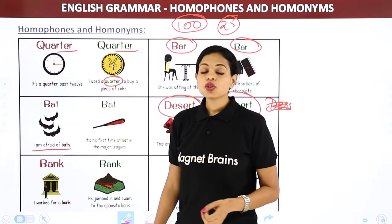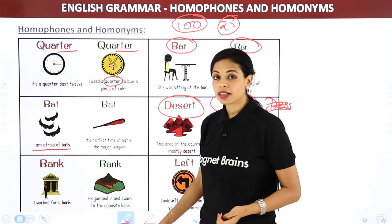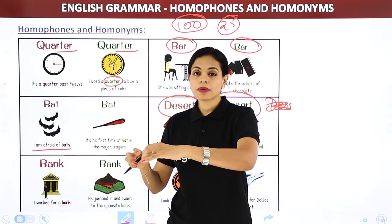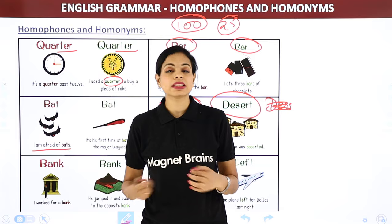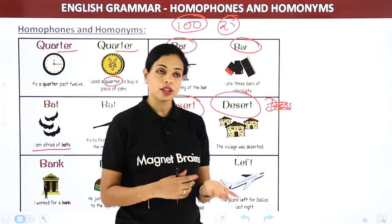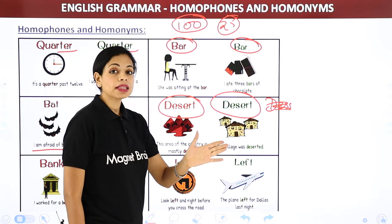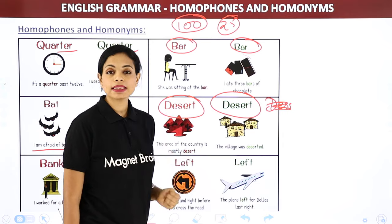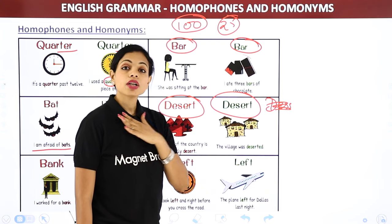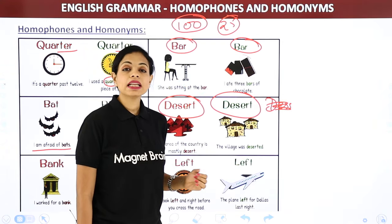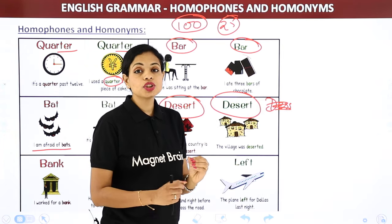Next — 'bank.' One is a river bank — 'he jumped in and swam to the opposite bank.' The river's boundary/edge is called a bank. Another meaning of bank is the financial institution where you deposit money. And 'left' — one meaning is direction (turn left), and another is to leave — 'I left the place,' or 'the train left for Singapore.'